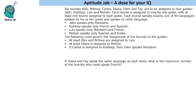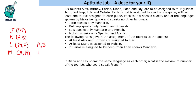Next question: if Diana and Faye speak the same language as each other, what is the maximum number of tourists who could speak French? Let us set up the table again — J, K, L, M are the four guides with their languages. A and B are assigned to Louis. Diana can speak Spanish or Arabic, so Diana and Faye could both speak Spanish or both speak Arabic.